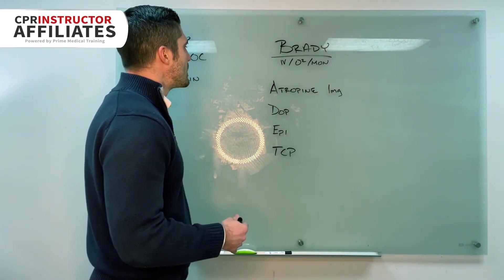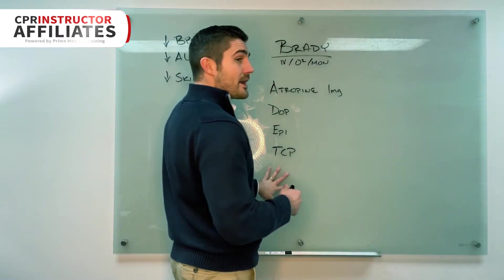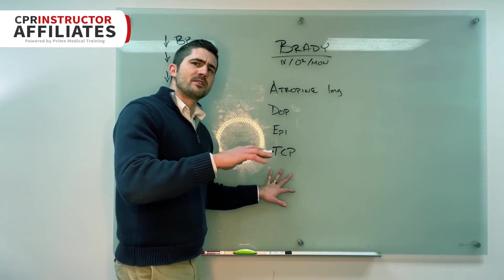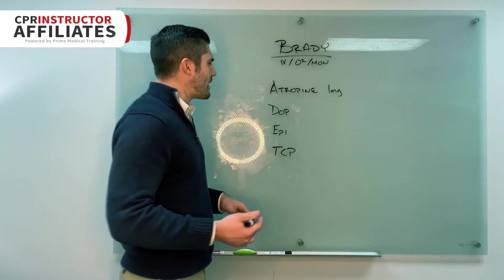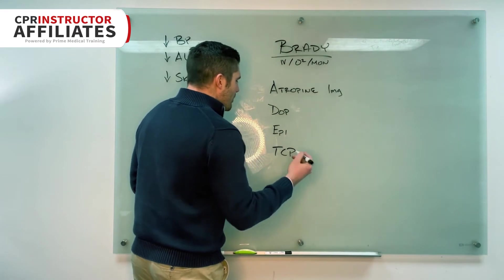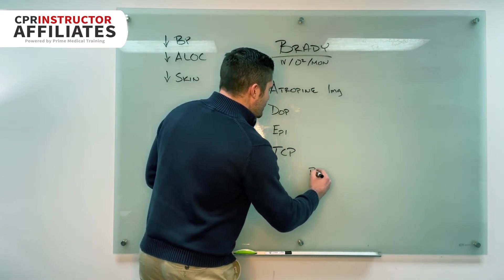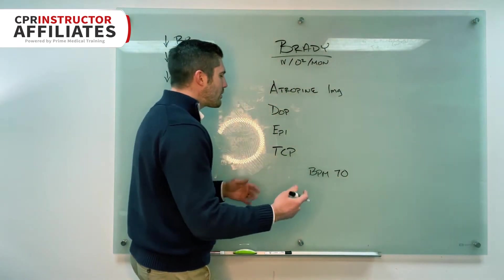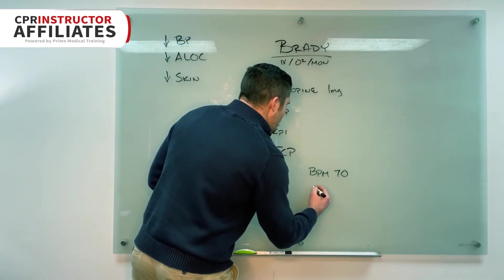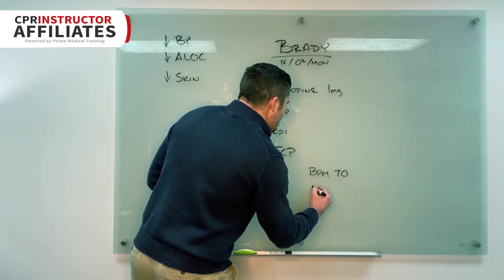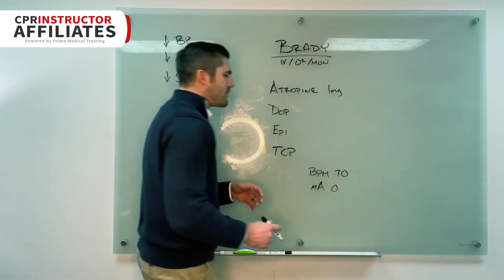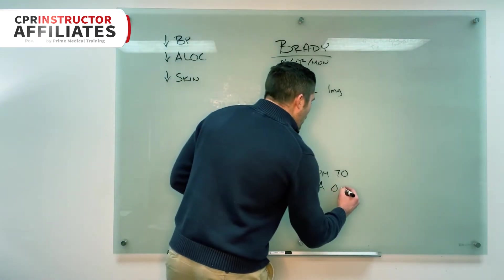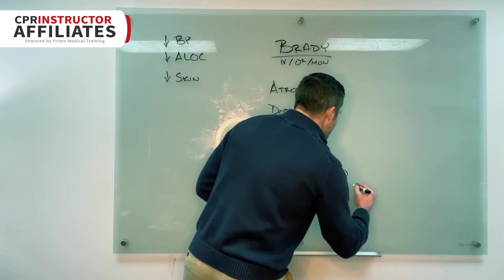Transcutaneous pacing, I'll also let them know, I talk about it in our technology review when we go over the monitor but I'll reiterate it and say hey guys, so remember you're going to need to do two things. You need to set your beats per minute and 70 is a good middle ground. And then you need to set your milliamps and you're always going to start at zero if the monitor doesn't already default to that number. And then we're going to go up until we get capture. So let's say we get capture at 35 milliamps.